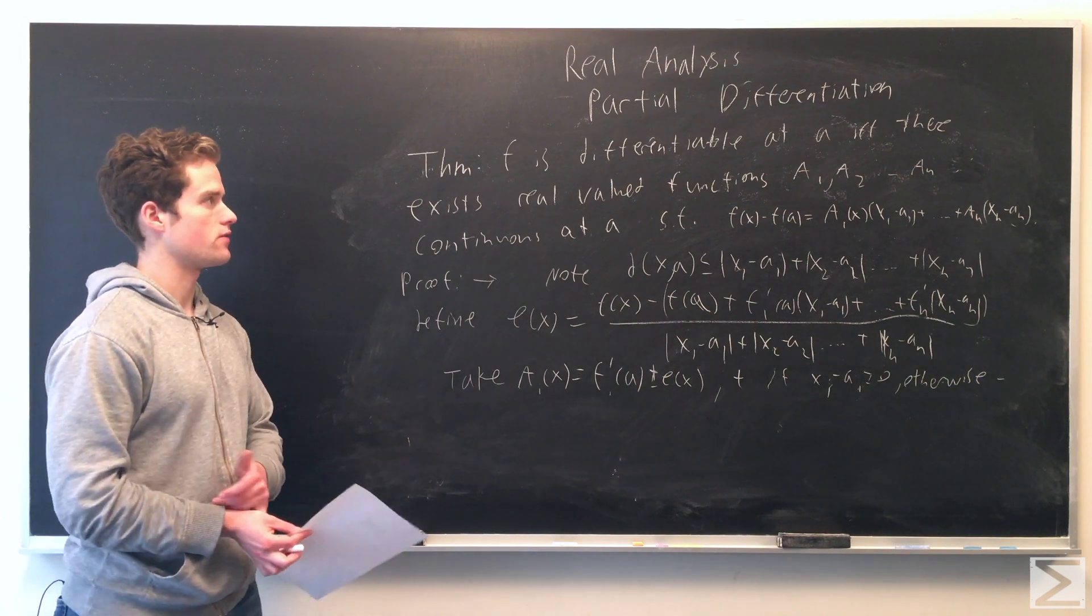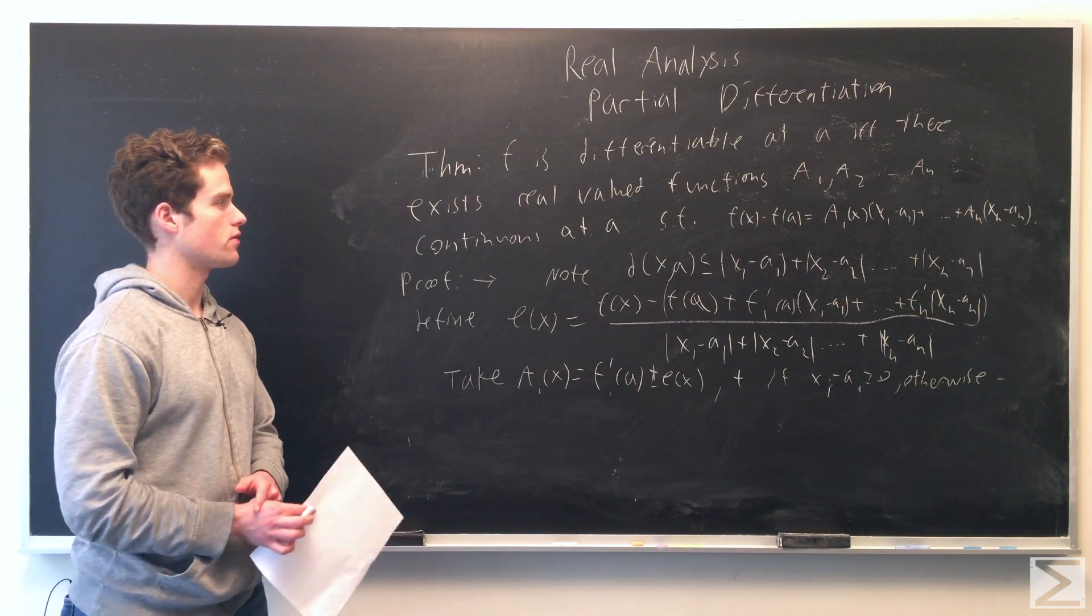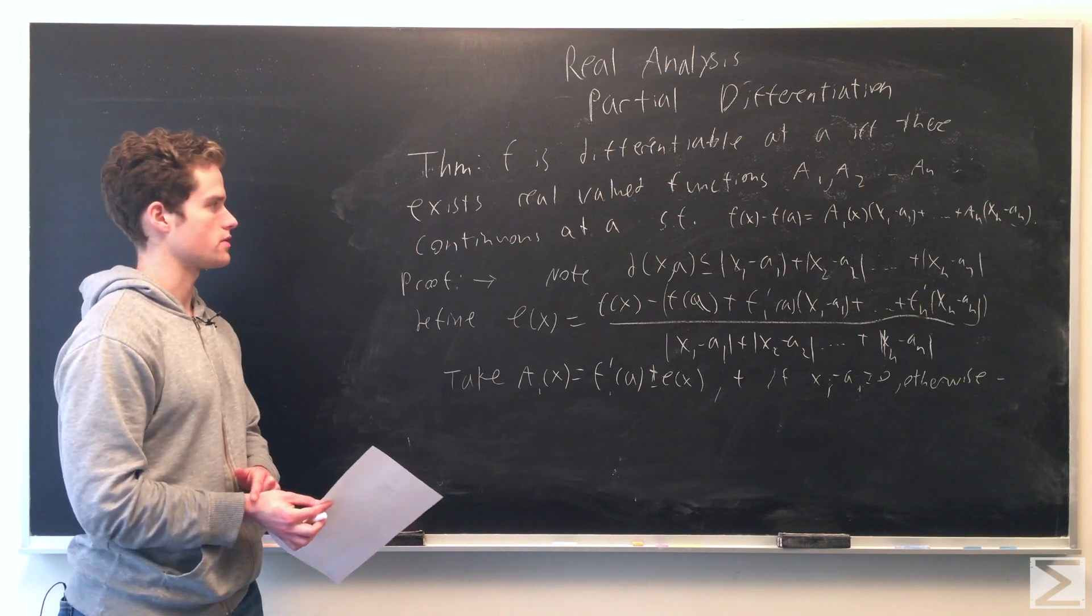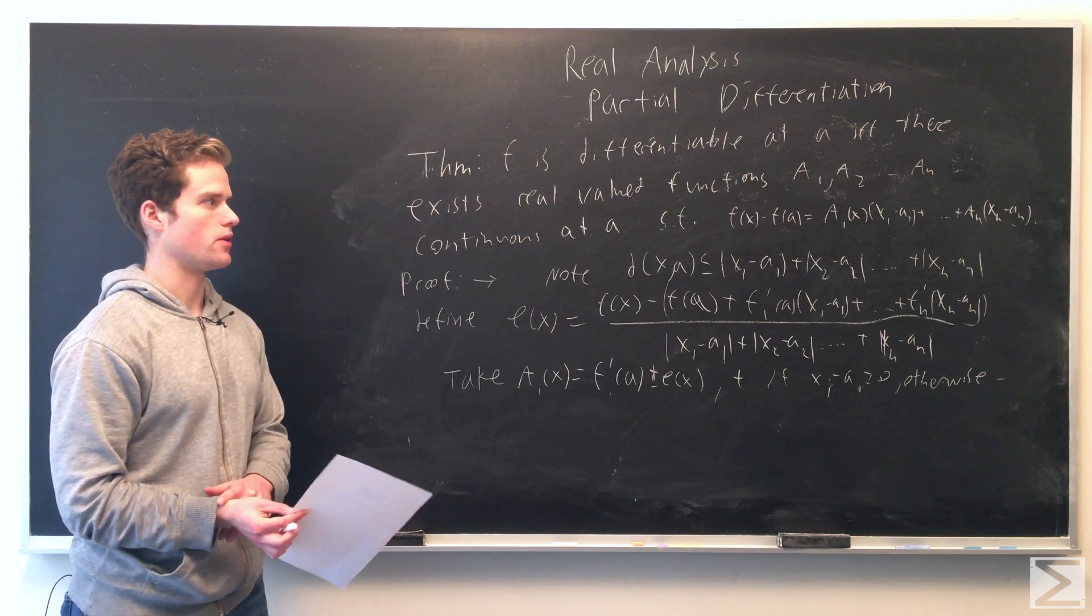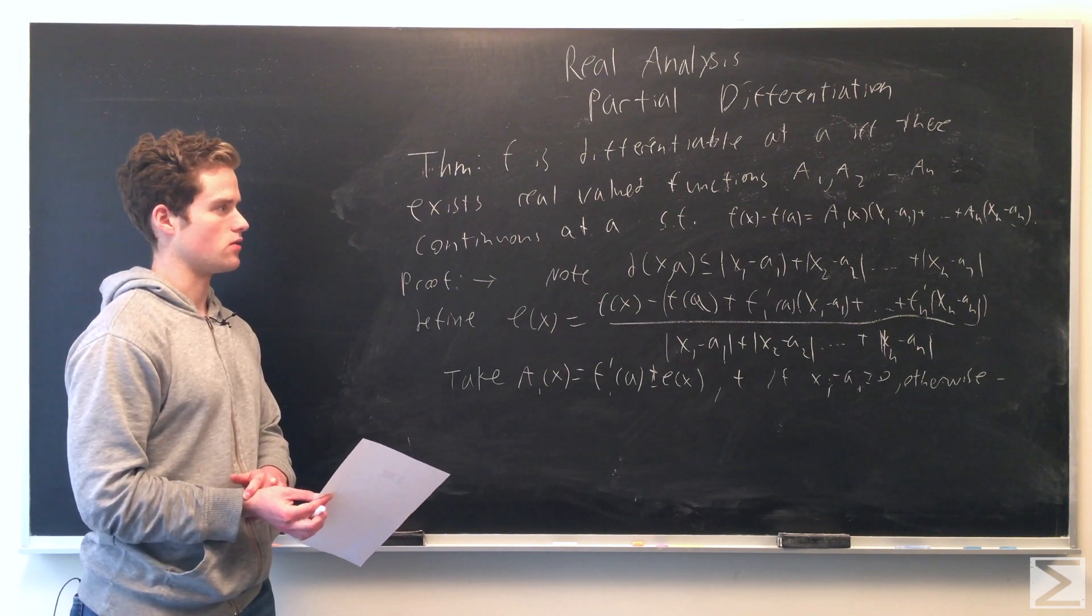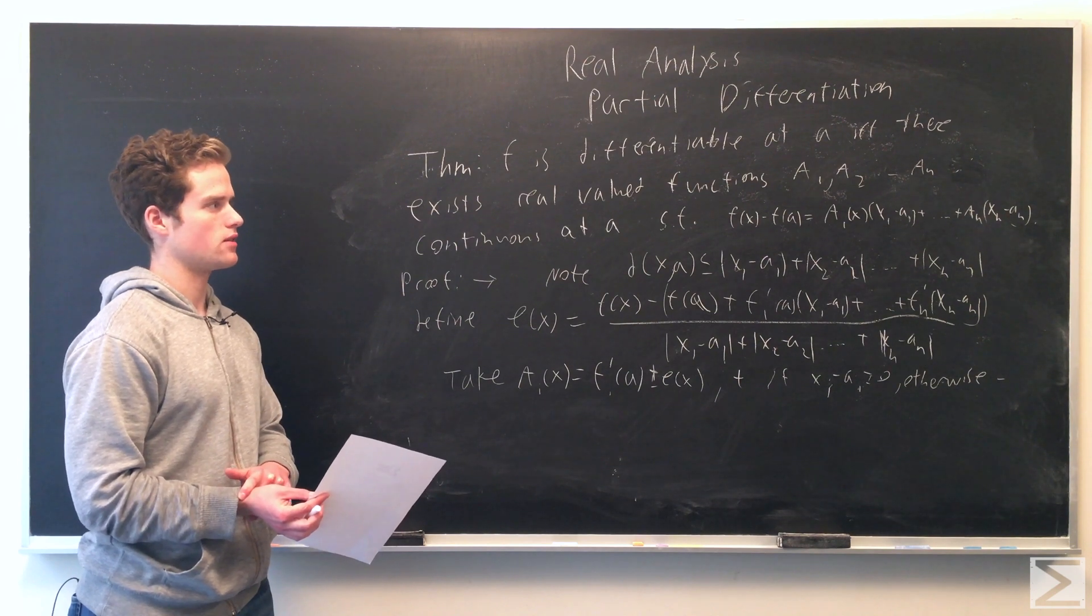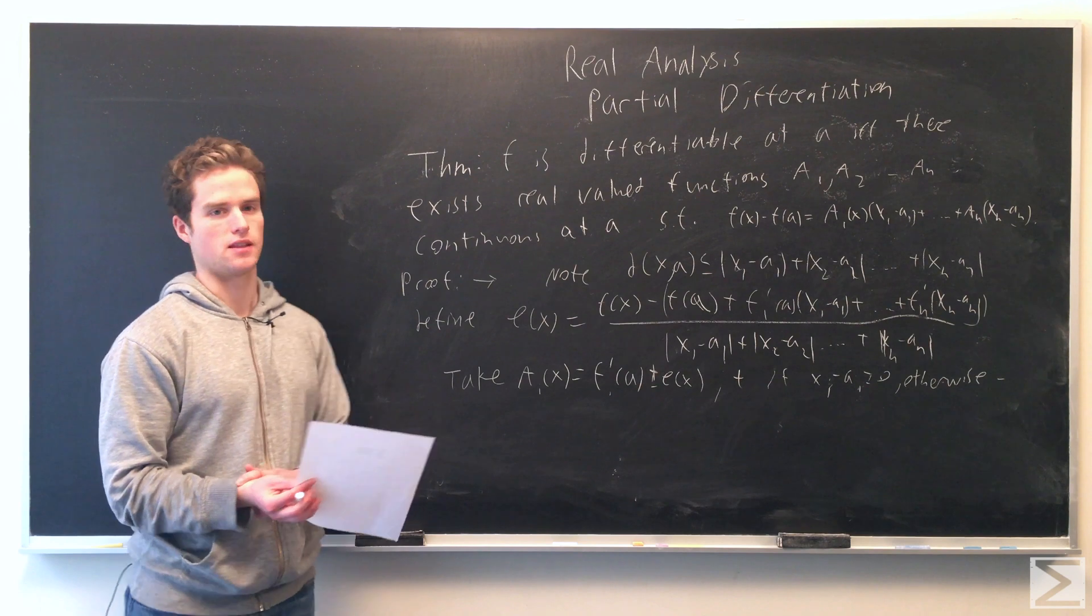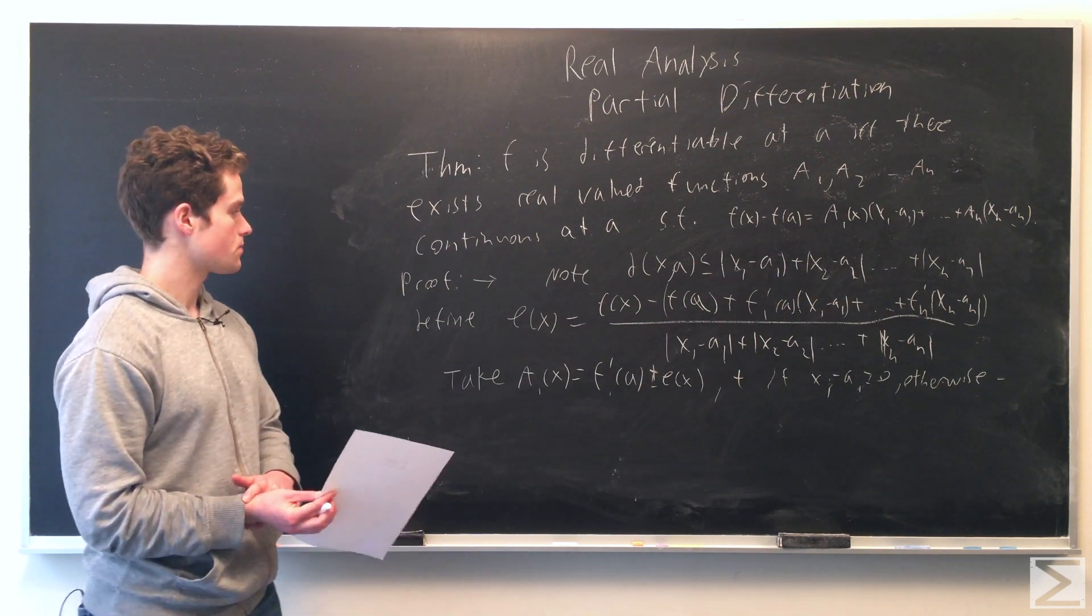We can prove f is differentiable at a if and only if we can find real valued functions A_1, A_2, ..., A_n continuous at a such that f(x) - f(a) equals A_1(x_1 - a_1) + A_2(x_2 - a_2) + ... + A_n(x_n - a_n).